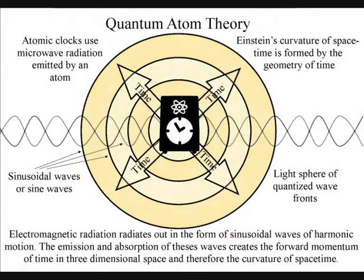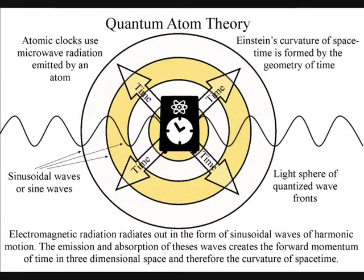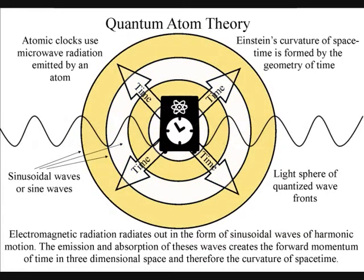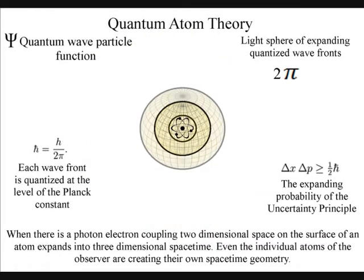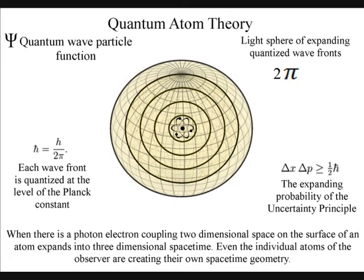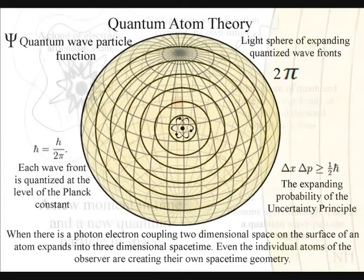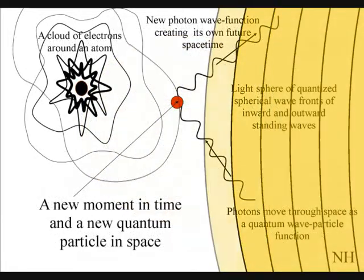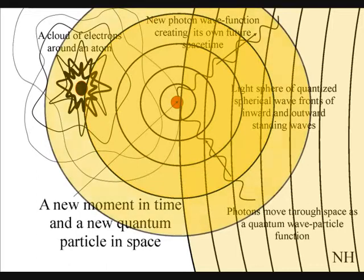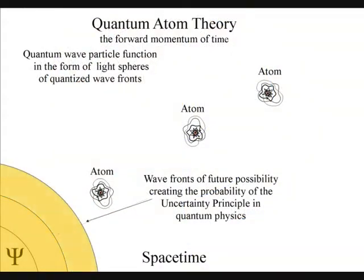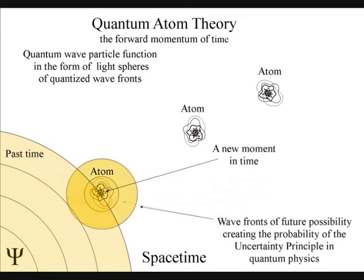To understand the Twin Paradox, we have to first understand how time is being created and the part we play in its creation. In quantum atom theory, the arrow of time is formed by the forward momentum of electromagnetic radiation from each individual atom. Just like ripples on a pond, each atom will radiate out light spheres of quantised wavefronts. Each expanding wavefront will create a probability of a future event. When a wavefront comes in contact with another atom, a photon or quantum of energy will be absorbed.